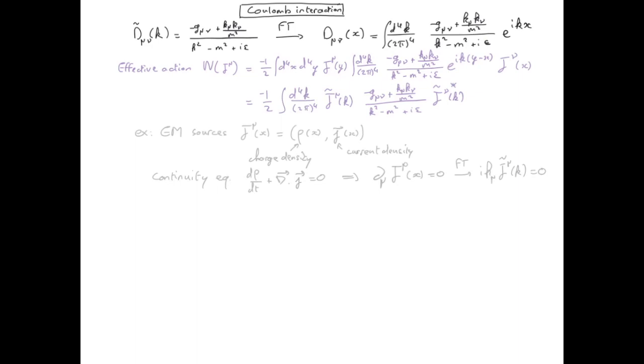So the conservation of charge implies that k mu j mu has to be equal to zero. And we can use this property to simplify the effective action because we recognize that we have k mu j mu, therefore this has to be equal to zero.